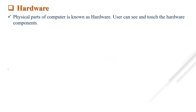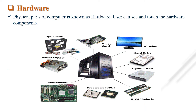The physical part of a computer is known as hardware. Users can see and touch hardware components. Computer hardware includes the CPU, monitor, mouse, keyboard, computer data storage, graphics card, sound card, speakers, and motherboard. Hardware is typically directed by software to execute commands or instructions, and a combination of hardware and software forms a usable computing system.